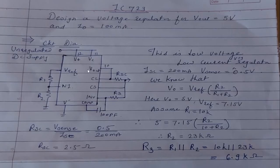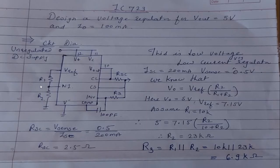This is the circuit diagram for the voltage regulator. IC723 is a 14-pin IC. The power supply V-plus and the control voltage are both connected to the unregulated DC power supply. R1 and R2 form a voltage divider network. V-reference is at pin number 6; it is internally generated at about 7.15 volts. We calculate R1 and R2 using the voltage divider law.